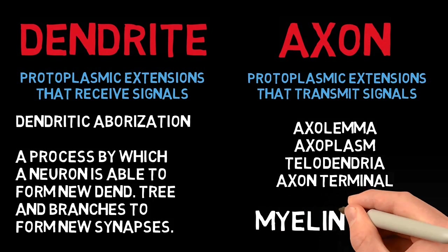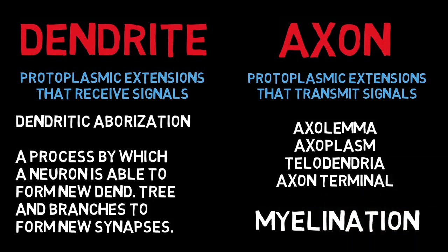Moving on to myelination. Myelin is a fatty substance that surrounds the nerve cell, and myelination is the process of deposition of myelin around the nerve cells. You can think of an electric wire with insulating substance around it. However, unlike the wire, myelin does not cover the entire neuron but leaves some gaps in between which are called nodes of Ranvier. This discontinuous structure helps in saltatory conduction, by which signals are rapidly transmitted across the neuron. Myelin is formed by glial cells: by oligodendrocytes in the CNS and Schwann cells in the PNS.